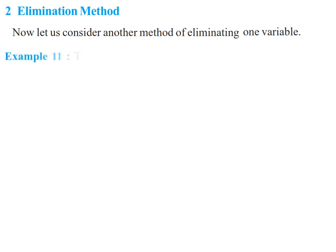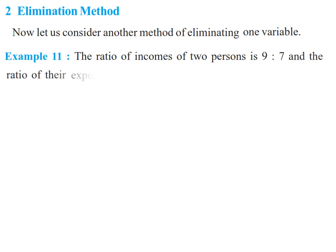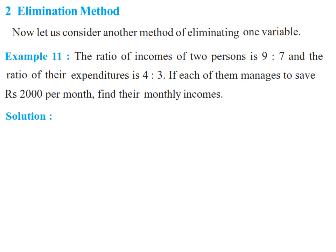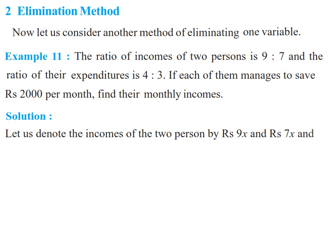Example number 11: The ratio of the incomes of two persons is 9:7 and the ratio of their expenditure is 4:3. If each of them manages to save rupees 2000 per month, find their monthly income. We have to find the monthly income of two persons. First, we solve the ratios by assuming the incomes of two persons as rupees 9x and rupees 7x, and their expenditures as rupees 4y and 3y respectively.